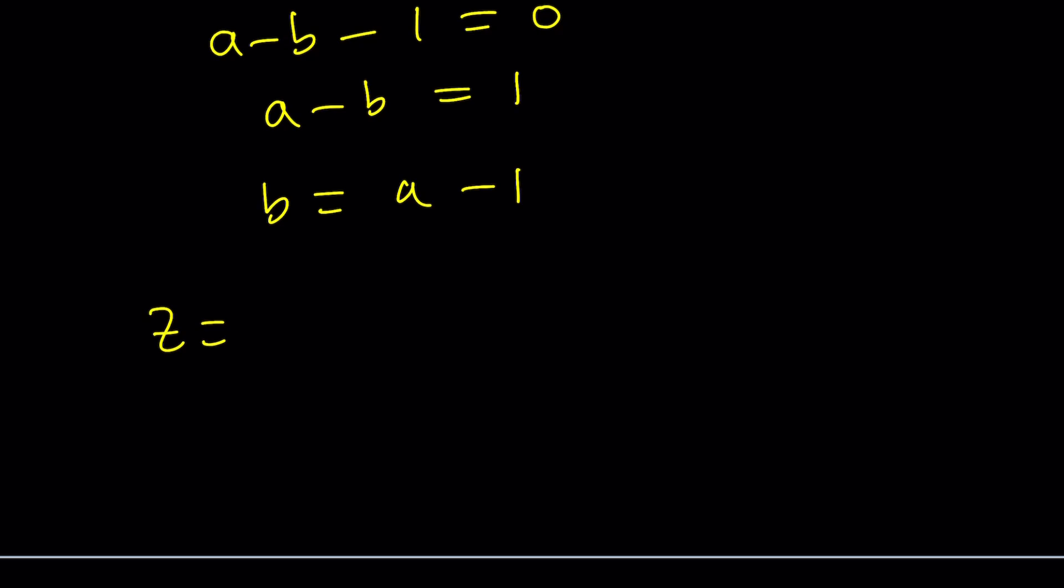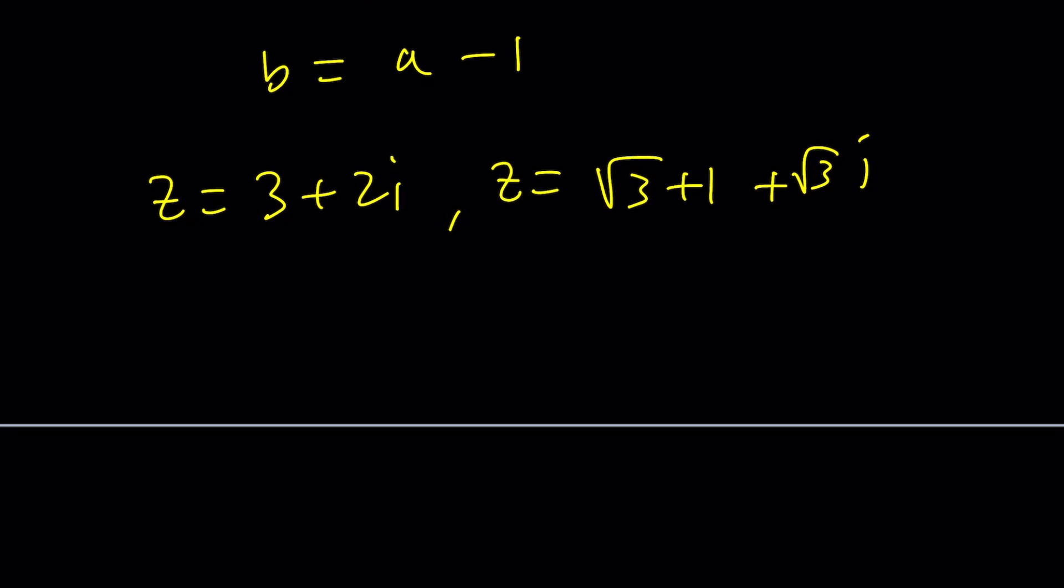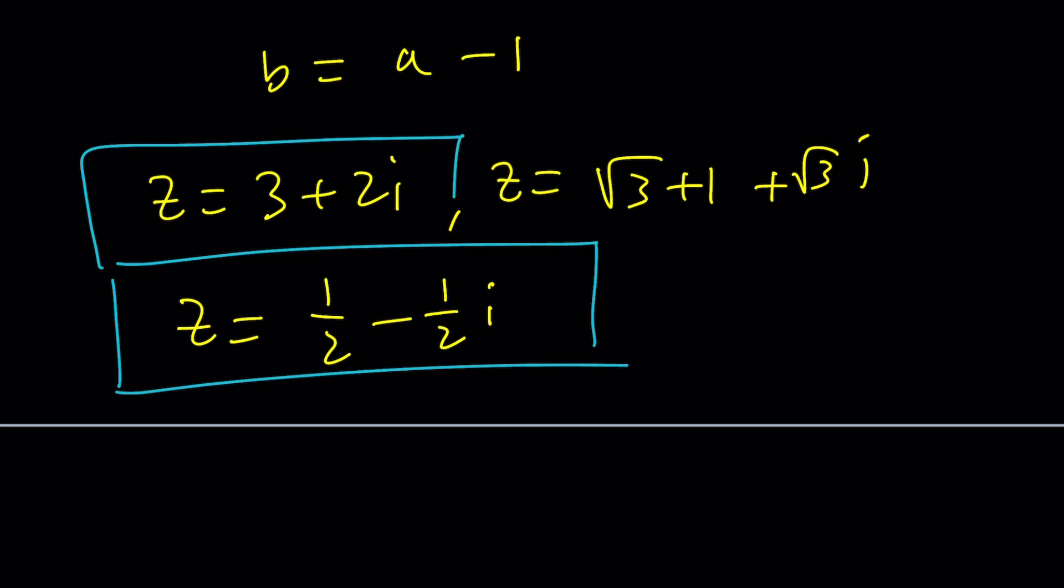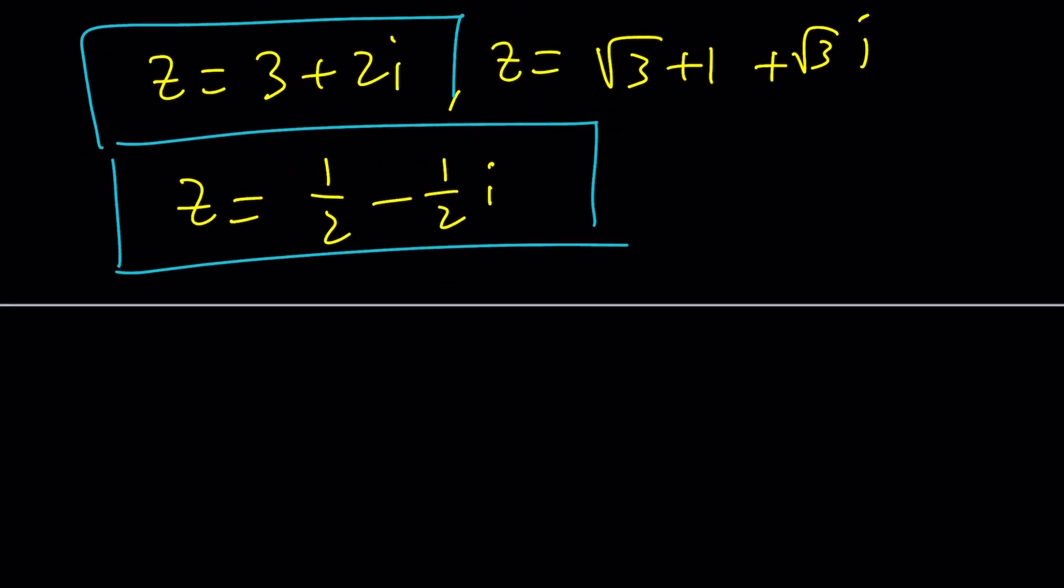So something like Z equals three plus two I or Z equals square root of three plus one plus square root of three I, right? And the real part is bigger. Or can it be something like one half minus one half I? Because again, one less than one half is negative one half, right? Wait a minute. Can we check if these are correct? Yes. For example, let's use three plus two I.